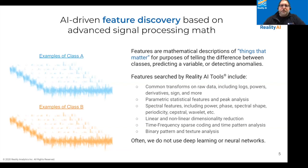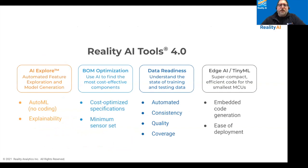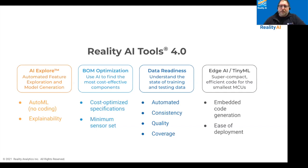I'm going to be walking you through the life cycle of product development using Reality AI tools. I'll be giving a live demonstration of each of these modules in Reality AI. We have the AI Explorer module, which we use to generate features and automatically generate machine learning models, as well as to do visualizations for explainability. We have a BOM optimization module, which can be used to find the most cost-effective components, set specifications, and identify the best place to place a sensor. Data readiness for managing the cost of data collection. And then finally, edge optimization and deployment of code.